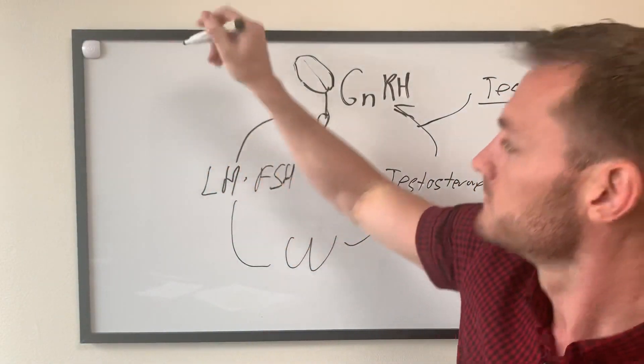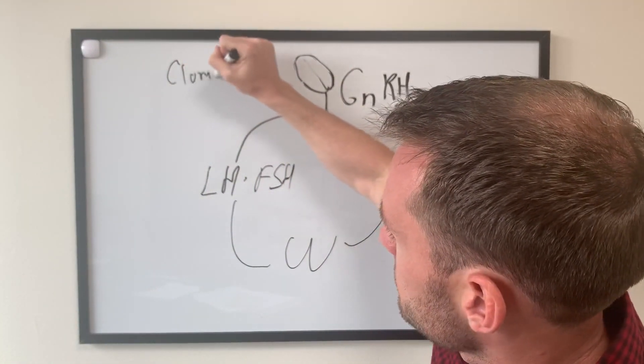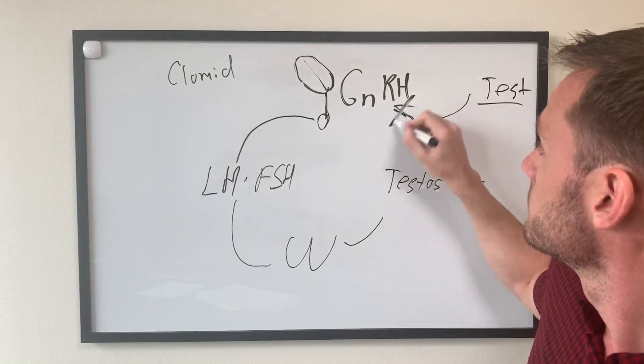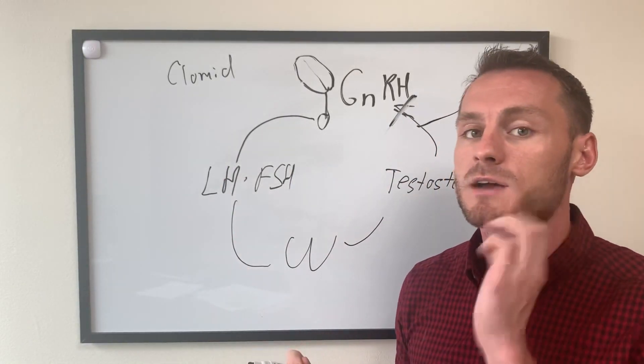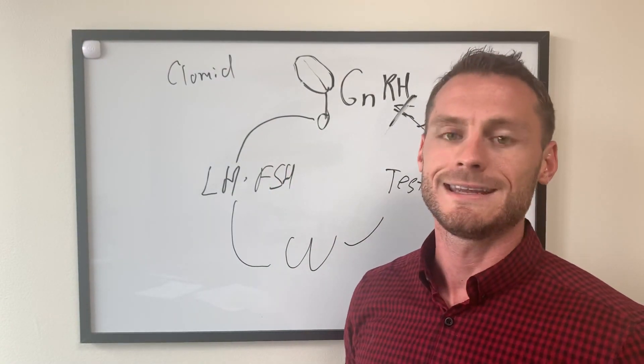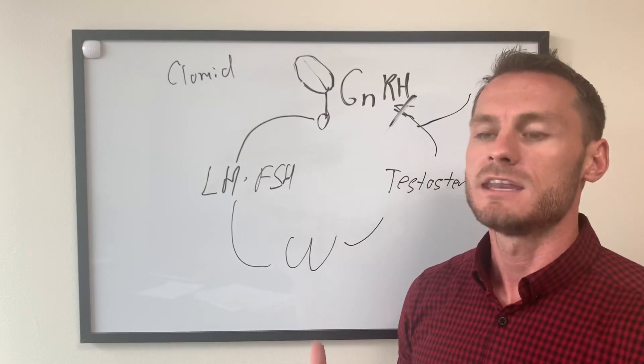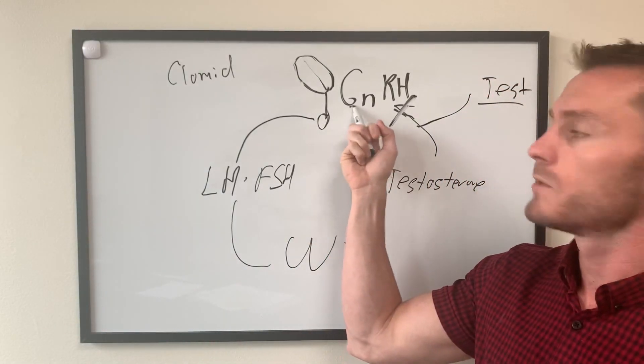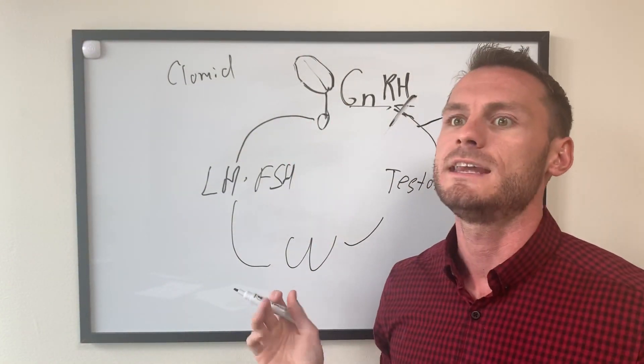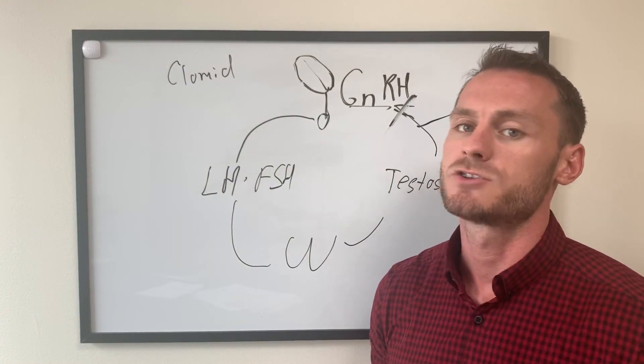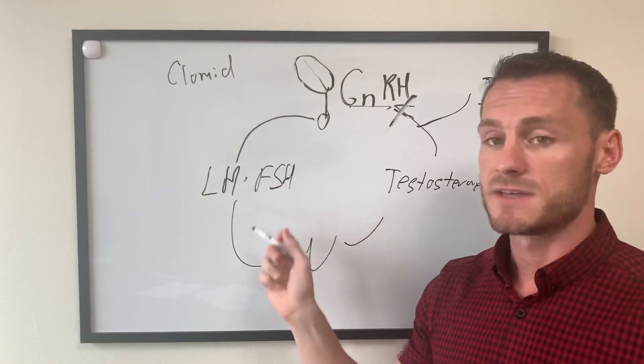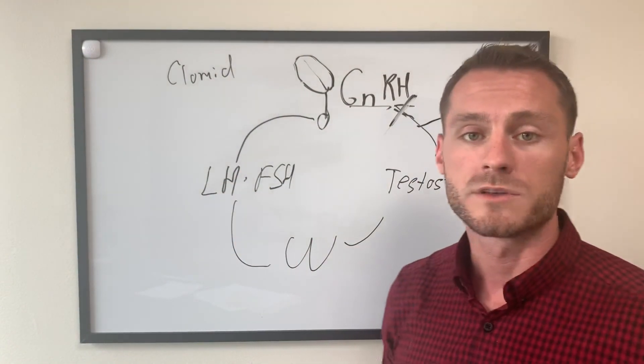So something like Clomid, which is clomiphene citrate, actually comes up to the brain. It's a selective estrogen receptor modulator, meaning it comes to the brain and it blocks the receptor. So the brain says, whoa, I didn't get any estrogen. I need to produce more. And so this hormone regulates testosterone and estrogen. So basically, when the brain says, whoa, I didn't get any of this, it increases the gonadotropin-releasing hormone that it puts out. That in turn increases LH and FSH and then will increase testosterone.